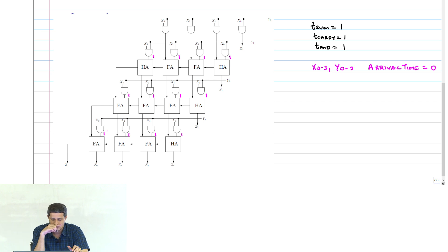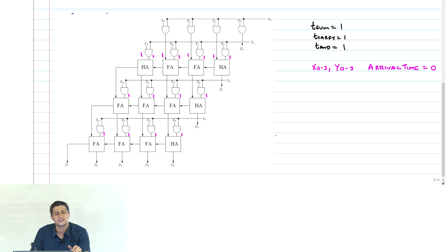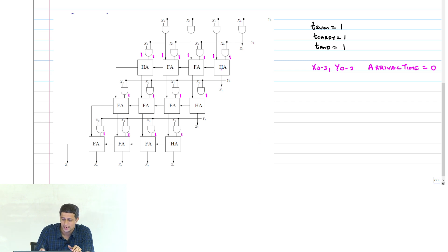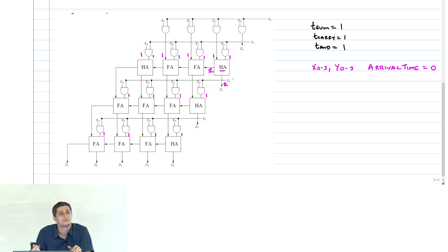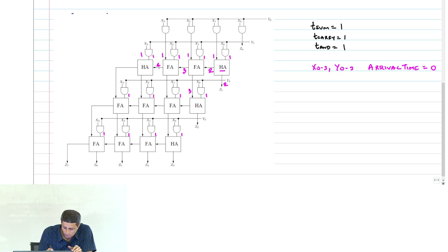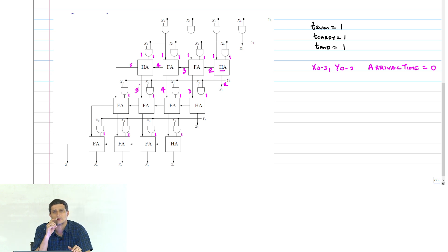These AND gates are also the same. For the first half adder, the arrival time for carry out is going to be 1 plus 1, which will be 2. For the next full adder: 3 and 3, then 4 and 4, then 5 and 5.